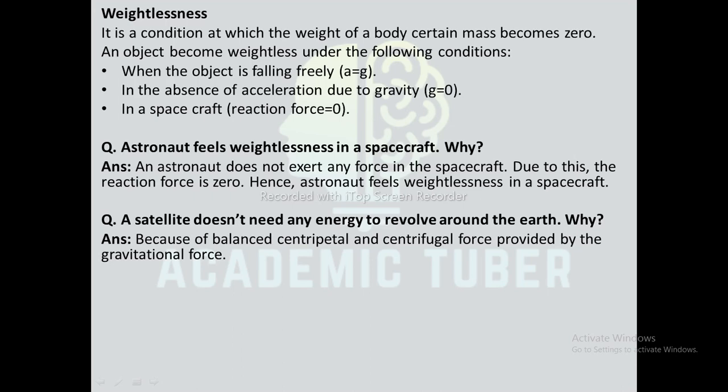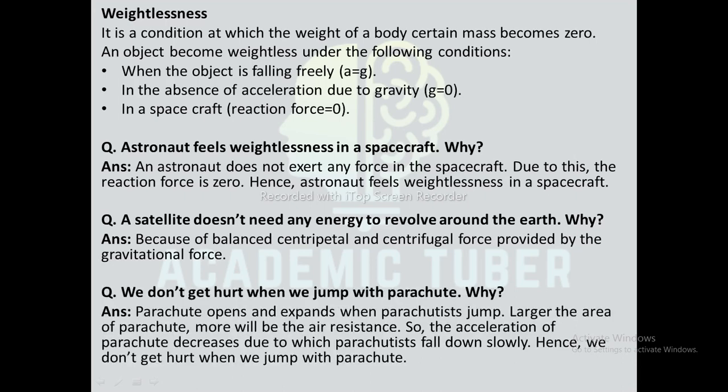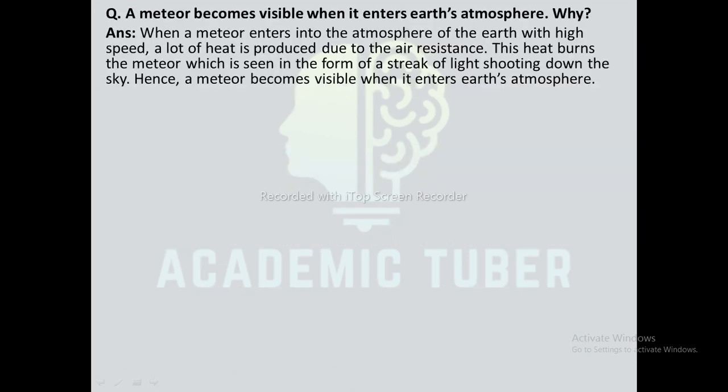Why does a satellite not need energy to revolve around a planet? It is because of the balance between centripetal and centrifugal force provided by the gravitational force. Why do we not get hurt when we jump with a parachute on Earth? When a parachute opens and expands, the larger the area of the parachute, the more air resistance is created, so the acceleration decreases and the parachutist falls down slowly — hence we don't get hurt.